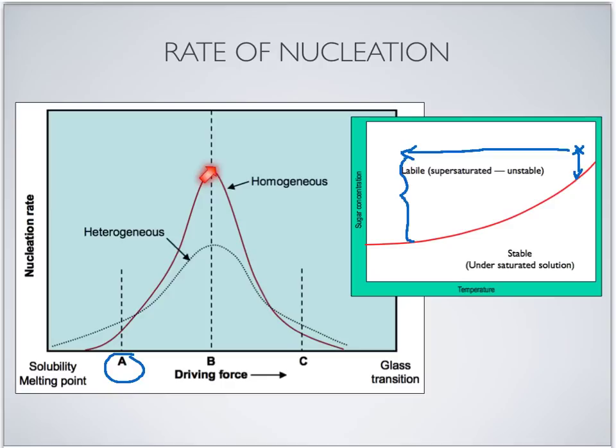At the maximum point, the viscosity of the system also increases. When the viscosity becomes very high, the nucleation rate starts to decrease because the diffusion of the solutes to form the crystal lattice in the nucleation stage is hindered or slowed down. We can observe the decrease in nucleation rate down to point C.